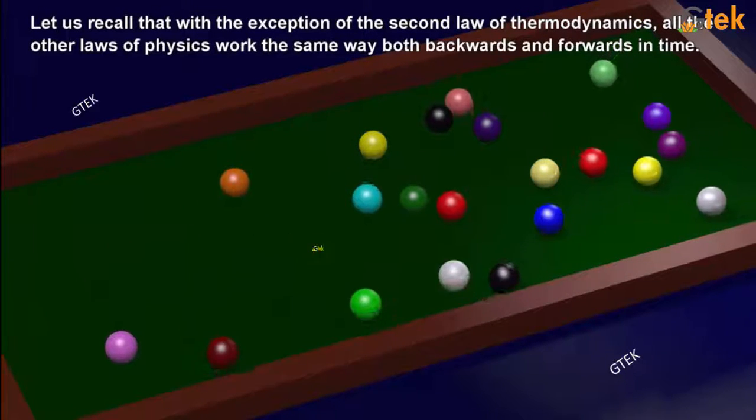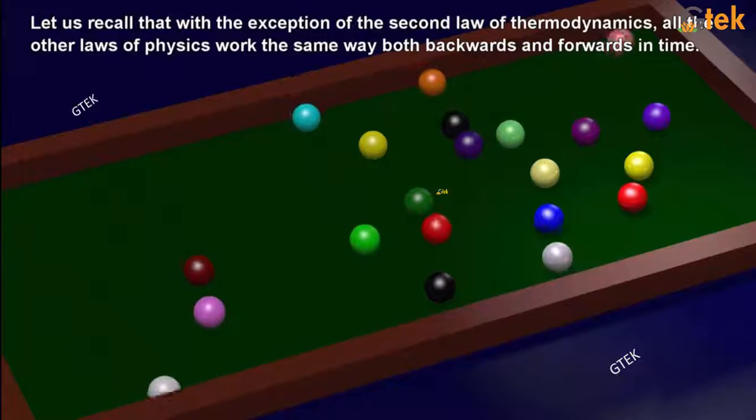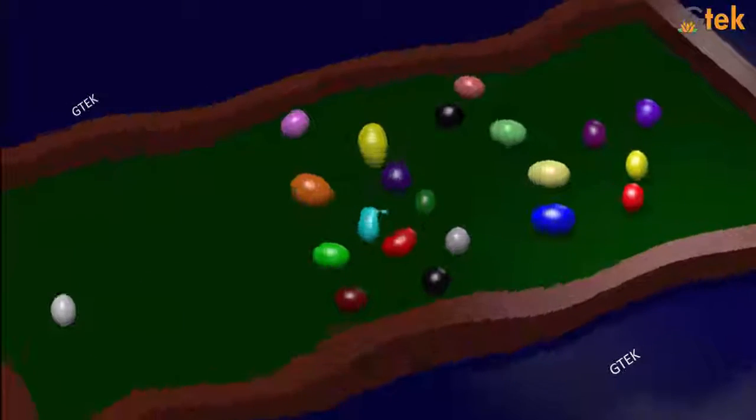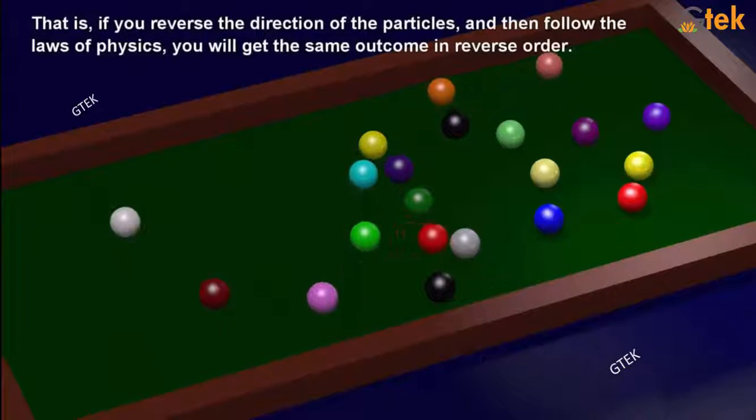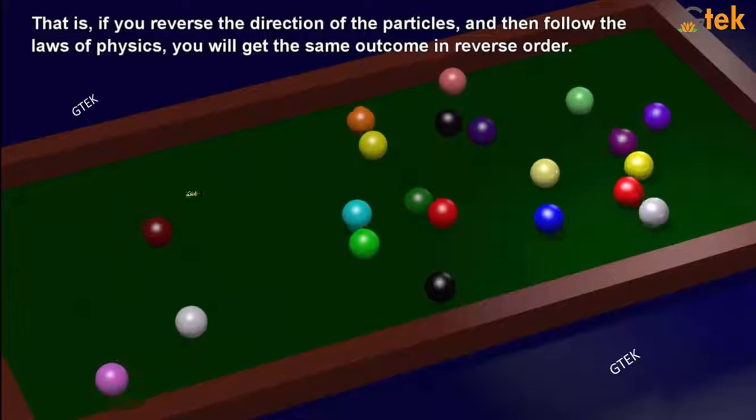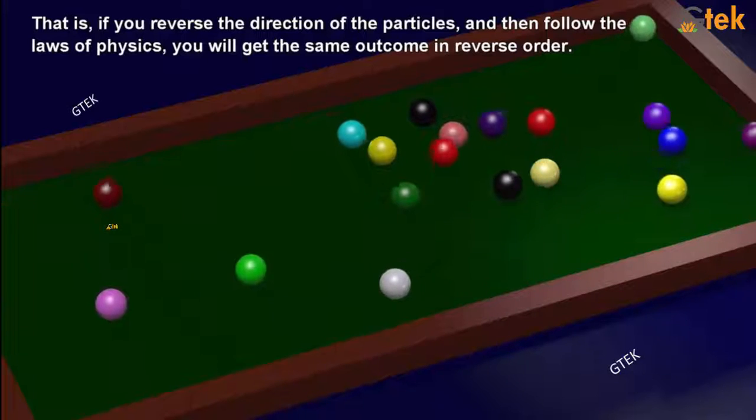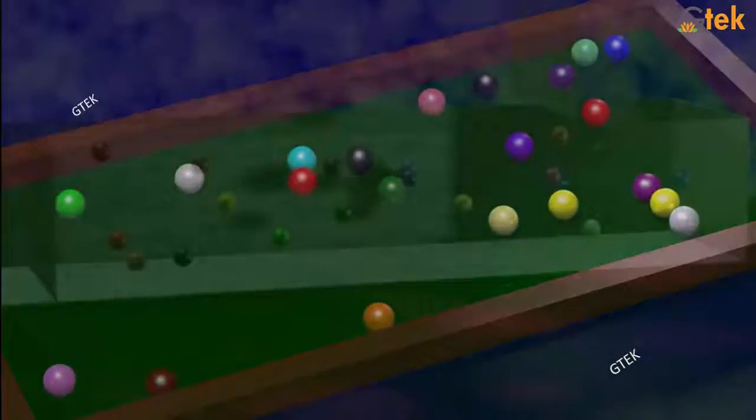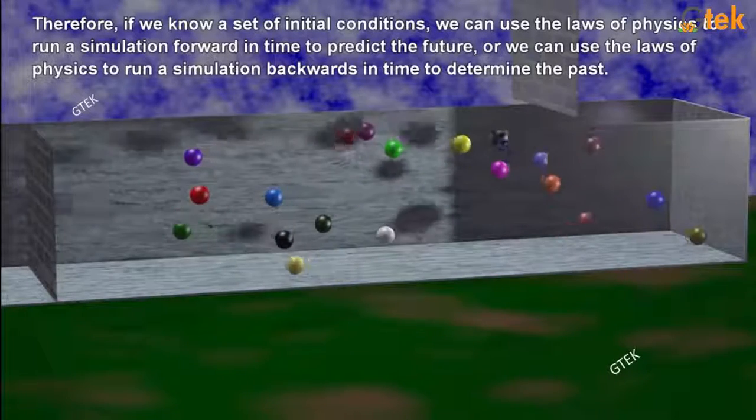Let us recall, with the exception of the second law of thermodynamics, all the other laws of physics work the same way both backwards and forward in time. That is, if we reverse the direction of the particle and then follow the law of physics, we will get the same outcome in reverse order.